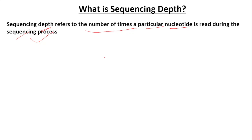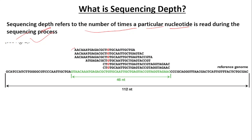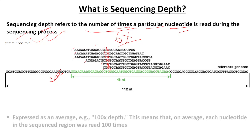Let's say these are different reads. As you can see, the nucleotide G has been read multiple times — one, two, three, four, five, six times. This is the reference sequence, and the nucleotide G has been read six times, so the sequencing depth will be 6X.